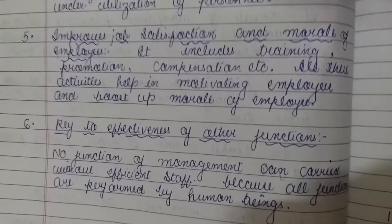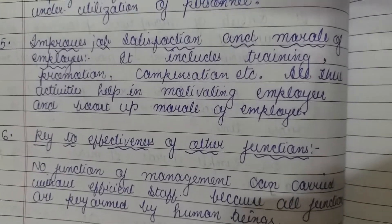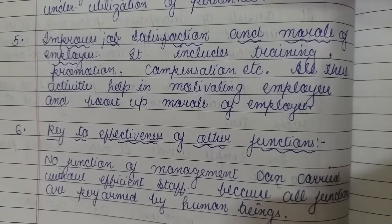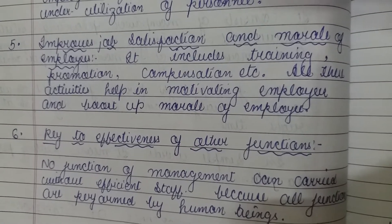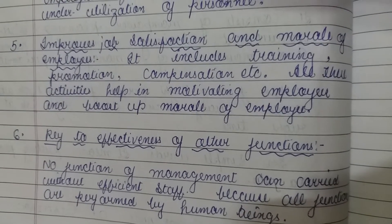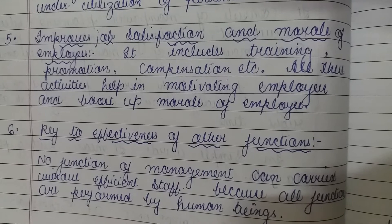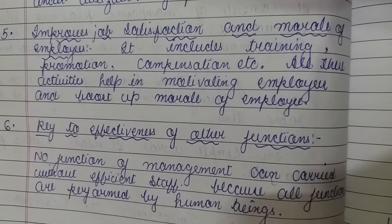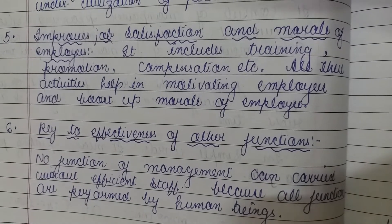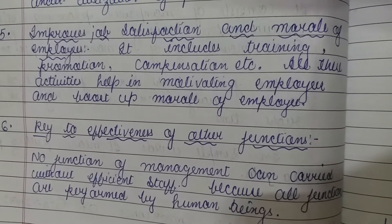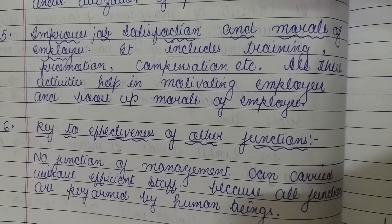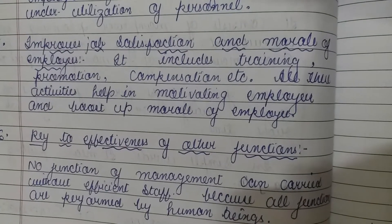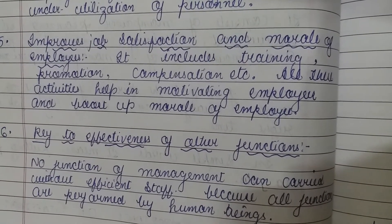The fifth point: improve job satisfaction and morale of employees. Staffing function does not end only at the appointment of the employee. Staffing function हमारा सिर्फ employees को appoint करने पर end नहीं होता. इसमें बहुत सारी चीजें include होती हैं — like training provide कराना. हमने employees को select किया; अगर market में कोई technology change हो जाती है, तो उनको time-to-time training दिलाना, business environment के according changes को adopt करने के लिए training दिलानी पड़ती है, उनका promotion करना.